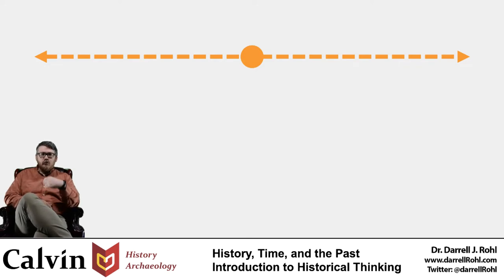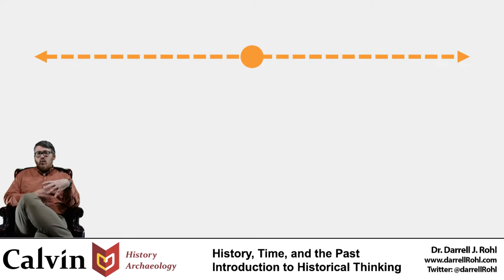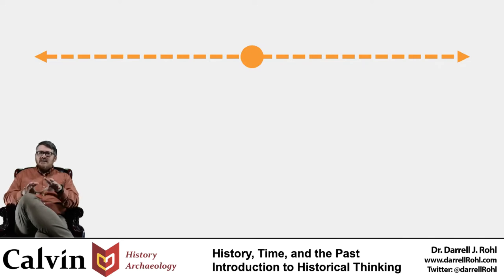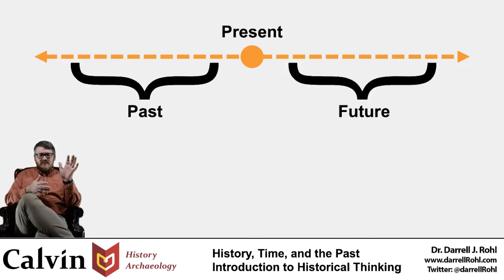I'm aware of and really fascinated by these debates, and I do personally enjoy thinking through various possibilities about time as part of my own theoretical work in archaeology. For now, though, we're going to assume a basically linear view of time. And if we think about time as something that is constantly moving, we can break it down into three separate units: the past, the present, and the future.